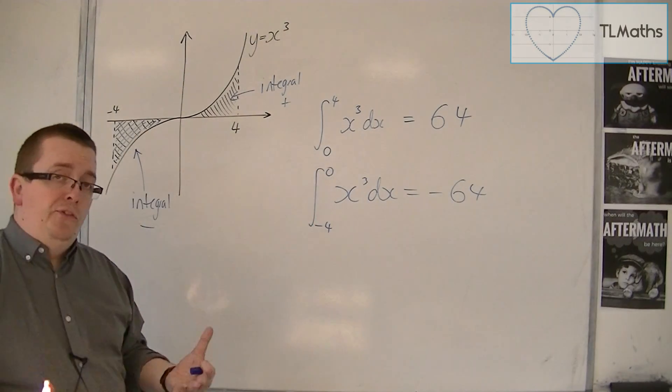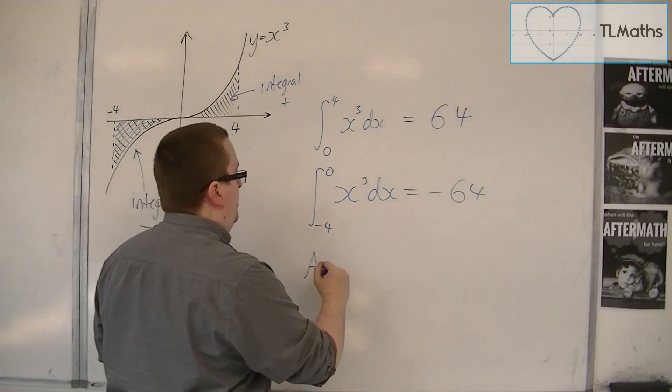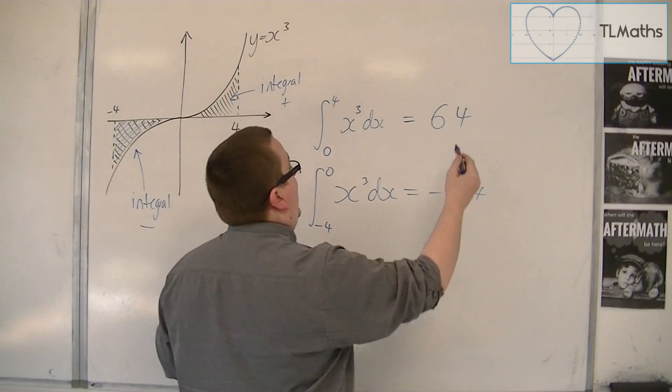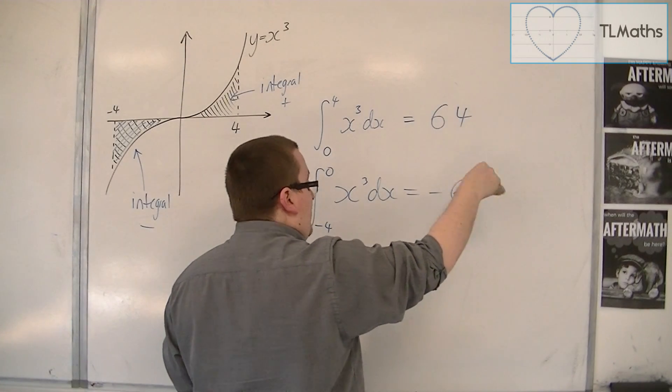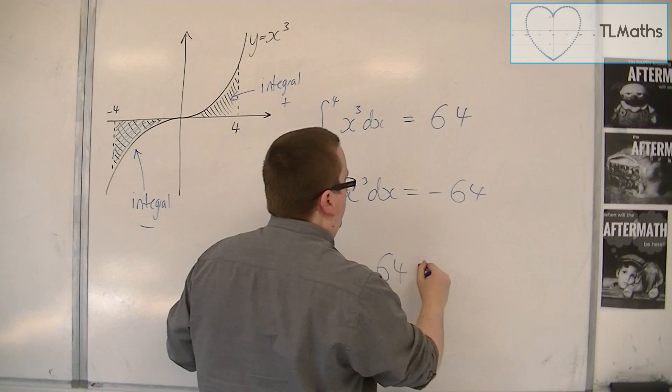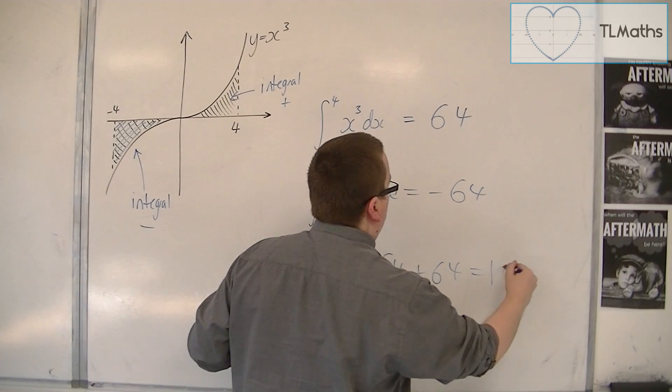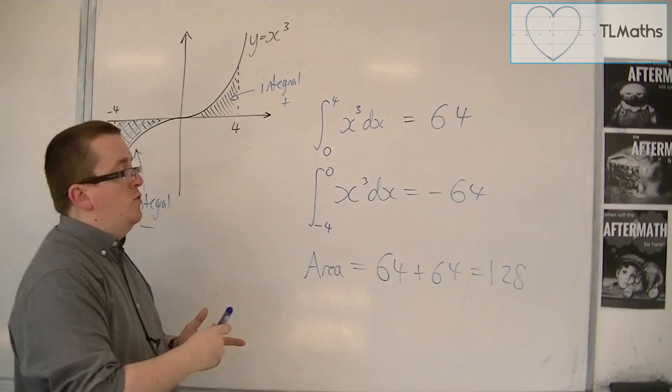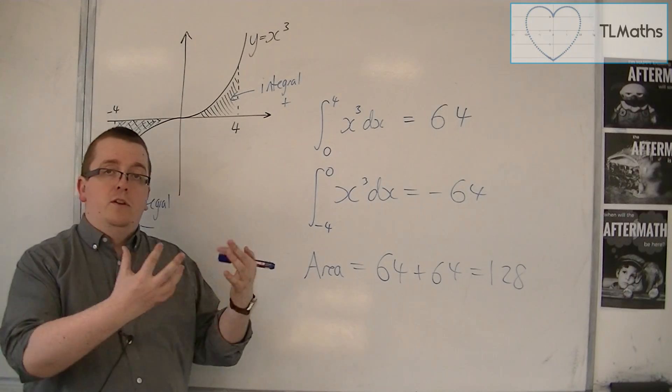But we would take the positive of both of these, so the area of this would be 64. The area of this is 64, so 64 plus 64 is 128. So you'd have to break the problem into several pieces.